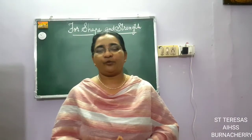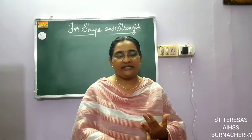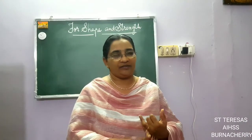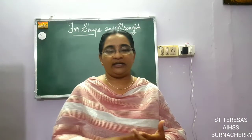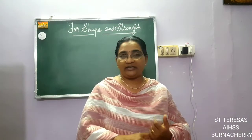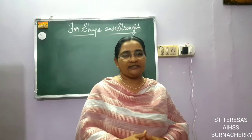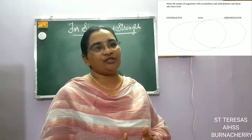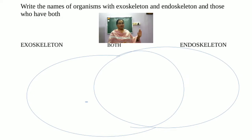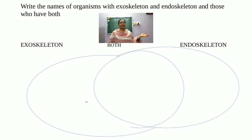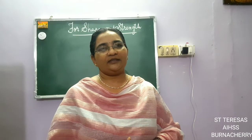In this chapter we learned: what is endoskeleton and which organisms have it; what is exoskeleton and which organisms have it; and what is the use of bones in our body. Now draw a table in your notebook with columns for animals with exoskeleton, endoskeleton, and both, and complete it. Thank you, children.